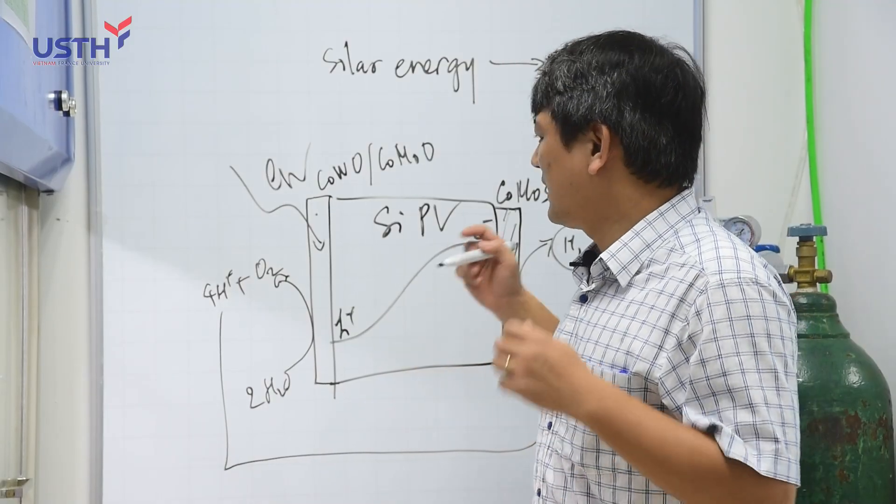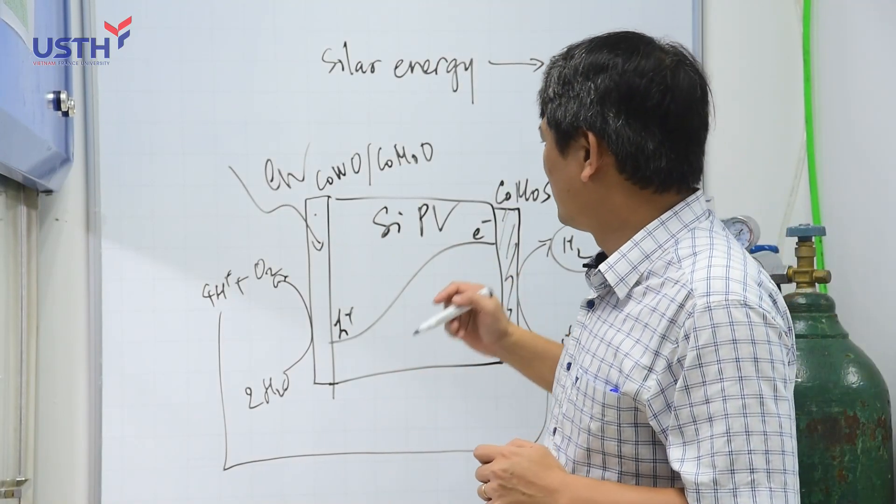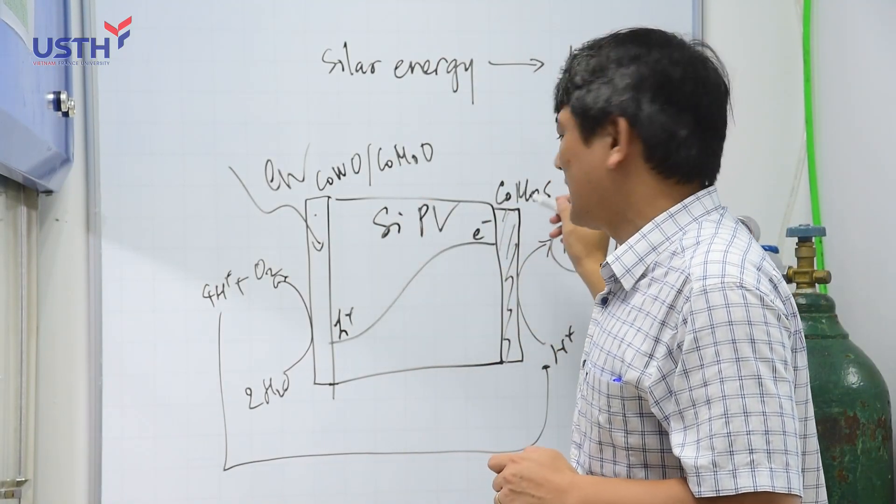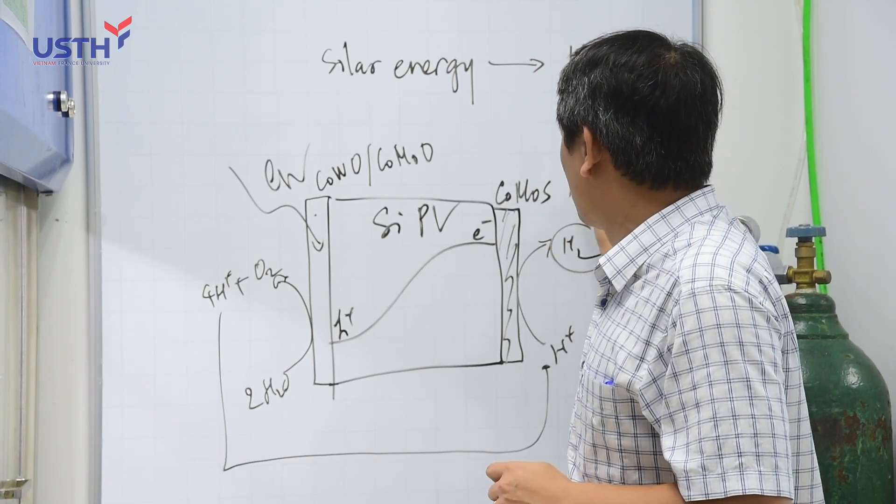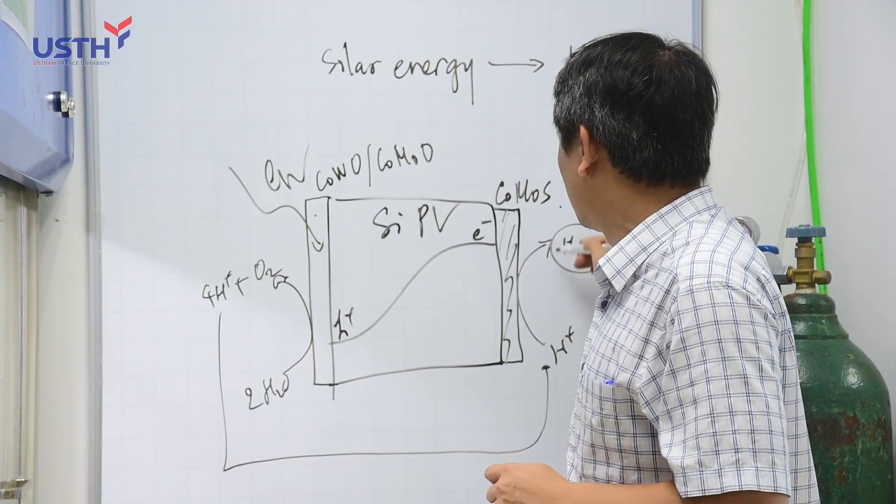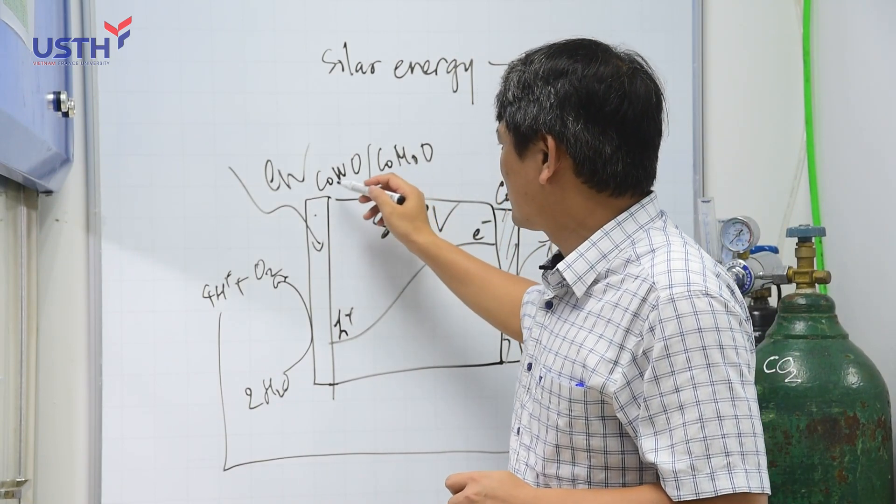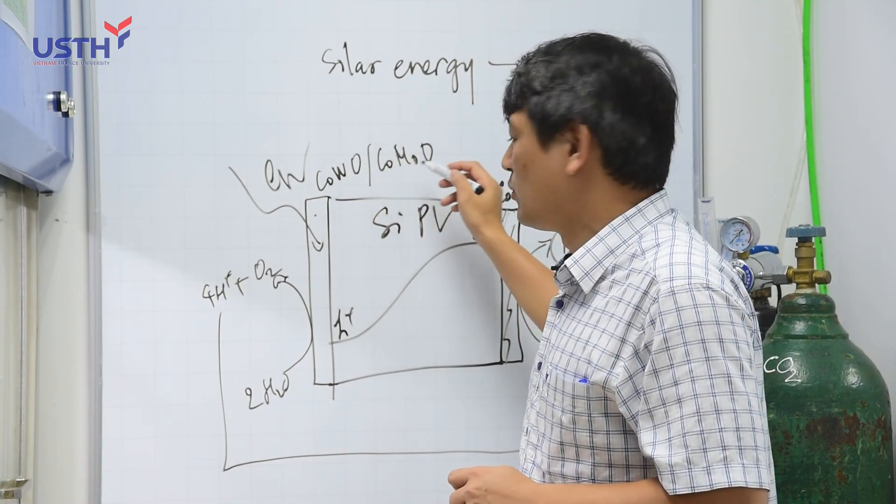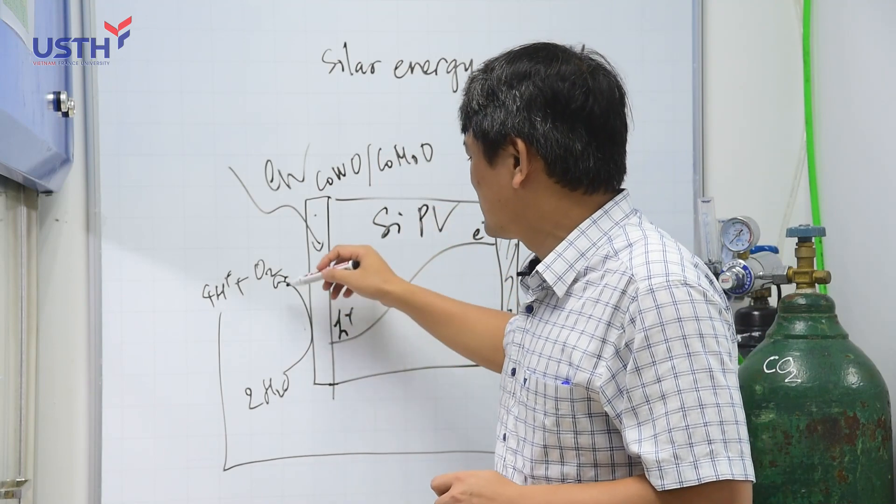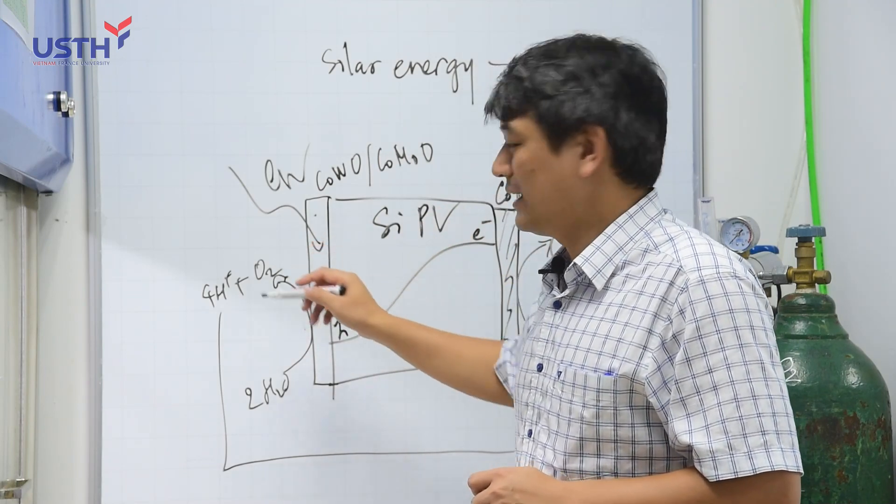So, in our lab, we are working to develop the catalyst made of earth abundant elements like cobalt molybdenum sulfide for the reduction of proton into hydrogen and also the oxide based on the cobalt molybdenum sulfide for the oxidation of water into oxygen and proton.